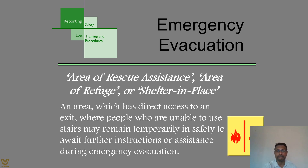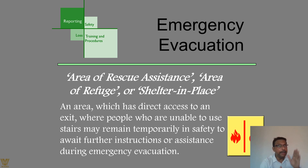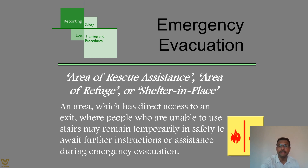People with medical conditions such as respiratory impairment, cognitive or psychiatric impairment, and others must all be included in the evacuation plan, because in an emergency things are not normal. The area of rescue assistance — or area of refuge or shelter-in-place — provides a place where the mere presence of other human beings gives comfort. It is an area with direct access to an exit where people unable to use stairs may remain temporarily in safety to await further instruction or assistance.